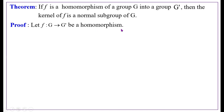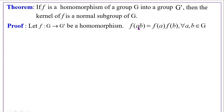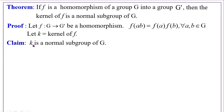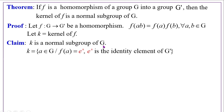Proof. Let F from G to G' be a homomorphism, satisfying F(A·B) equals F(A)·F(B) for all A, B in G. Let K be the kernel of F. We must show K is a normal subgroup of G. By definition, K equals the set of all A in G such that F(A) equals E', where E' is the identity element of G'.